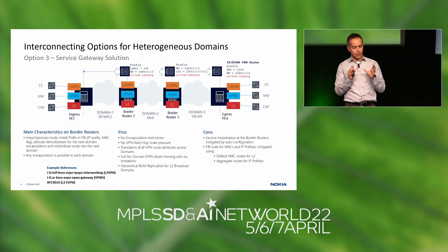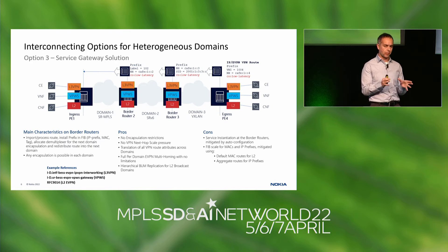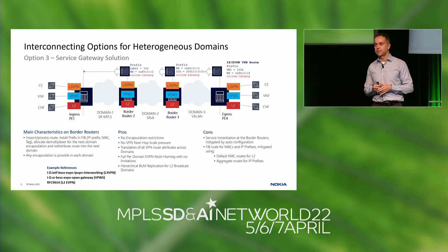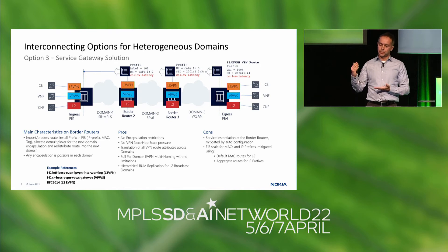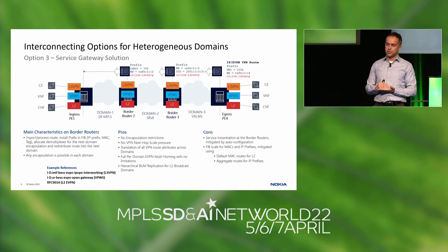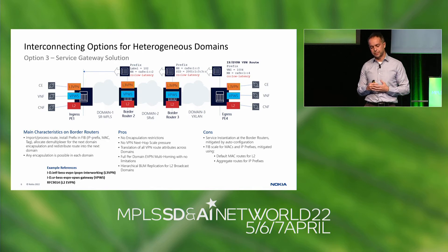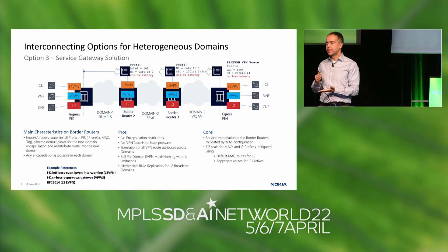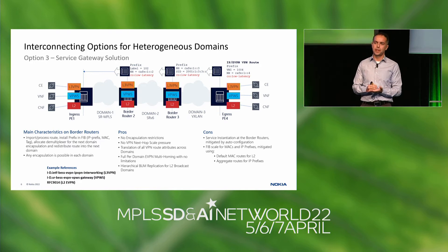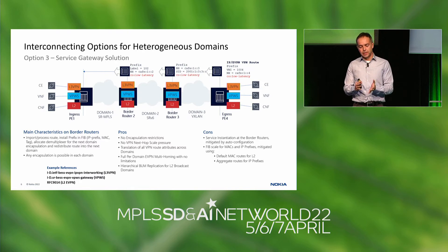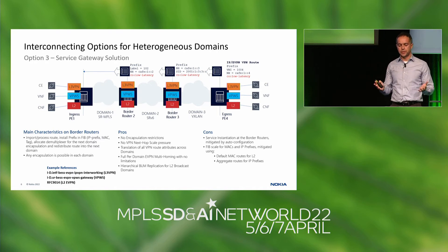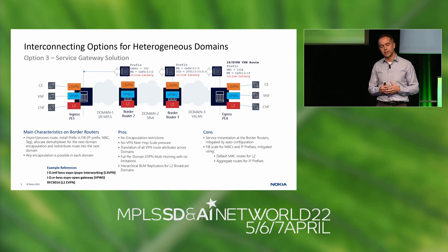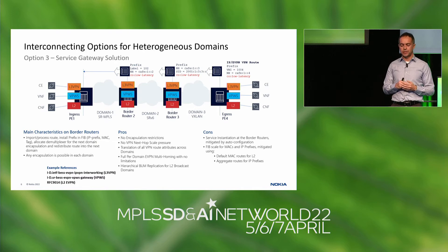The third group is the service gateway solution. The border routers now have service instantiation — they become service gateways. The service gateways process routes, program the FIB with MACs and IP prefixes, redistribute only those routes strictly needed, change the encapsulation, preserve certain attributes and translate others. You have full flexibility. There is no restriction in terms of encapsulations, no VPN next hop scale pressure on the ingress PE, and you can translate all VPN route attributes as you please.